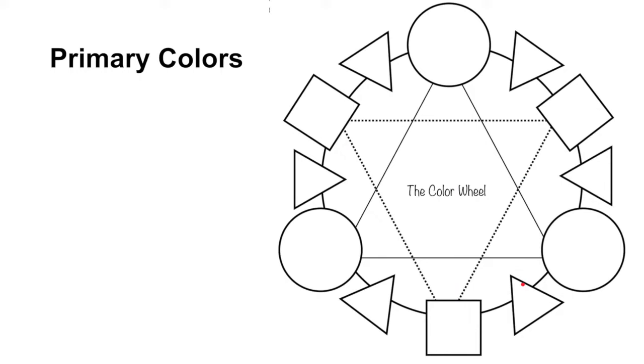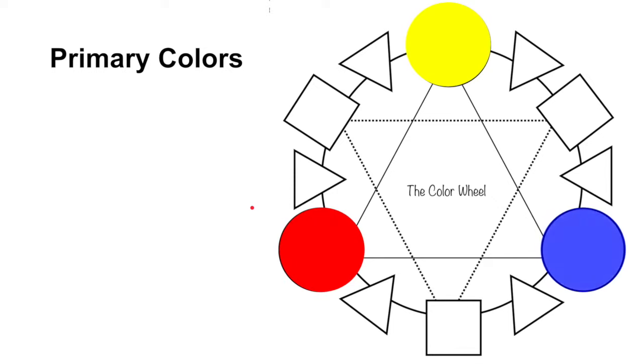So we're going to start with making our colors for creating a color wheel, and to do that we need to start with the primary colors, the most basic of all the colors, which would be red, yellow, and blue.